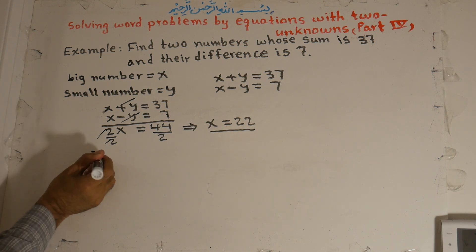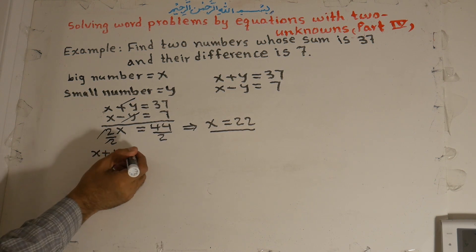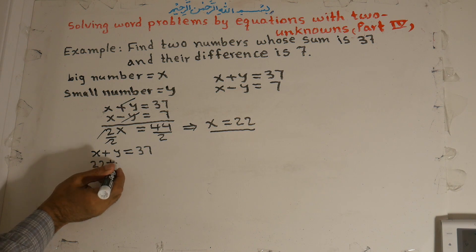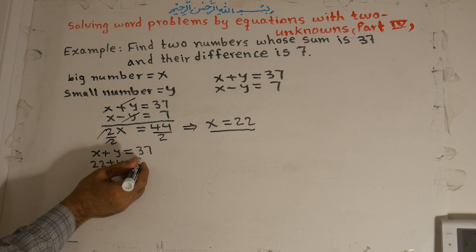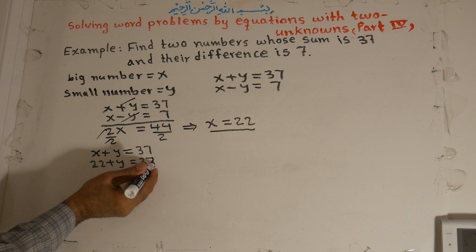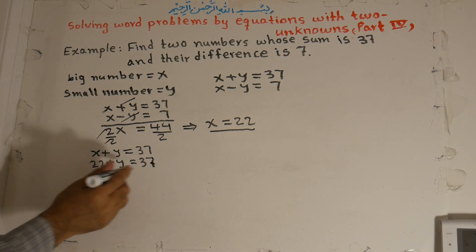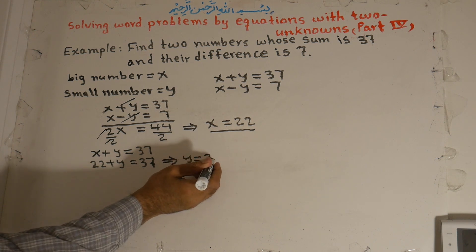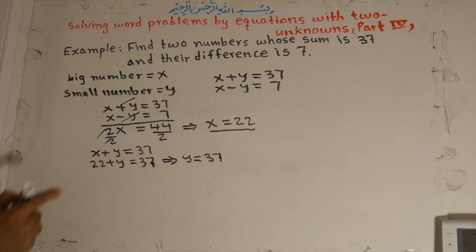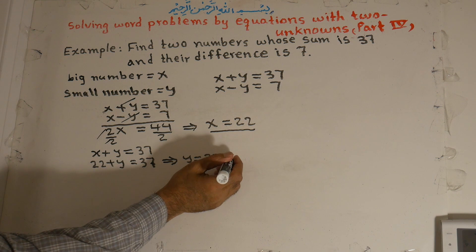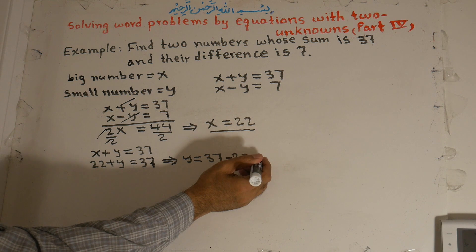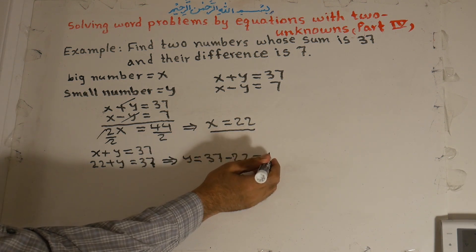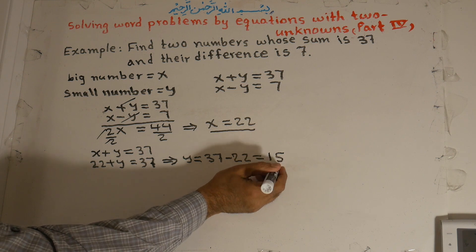x plus y is equal to 37. Instead of x, we substitute 22: 22 plus y is equal to 37. We move the 22 to the right side, and it becomes negative 22. So y is equal to 37 minus 22, which is 15.